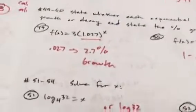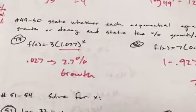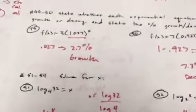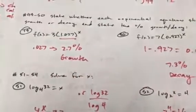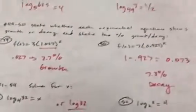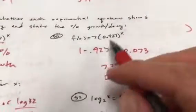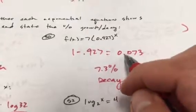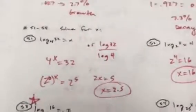If your base is greater than 1, it's growth. Whatever is left from 1 — that 0.027 — just move the decimal over twice: 2.7% growth. If the base is less than 1, it's decay: do 1 minus that value, move the decimal over twice, giving 7.3% decay.